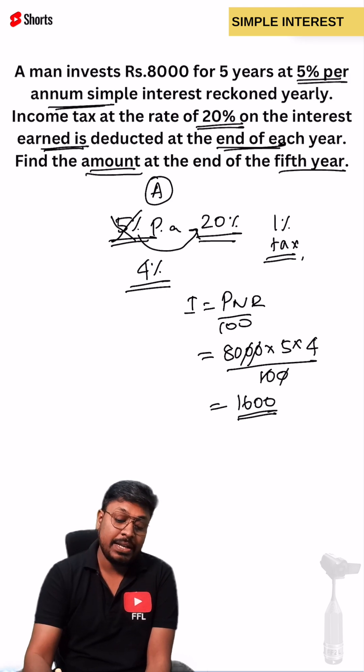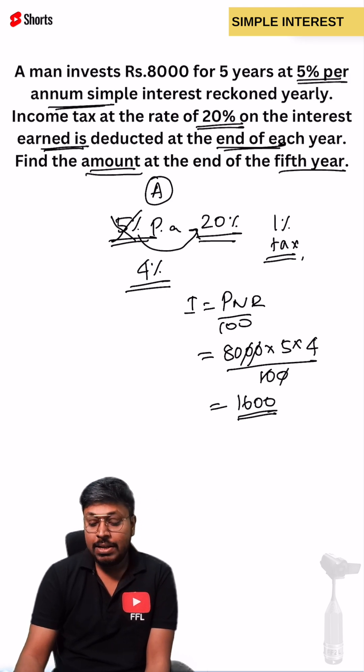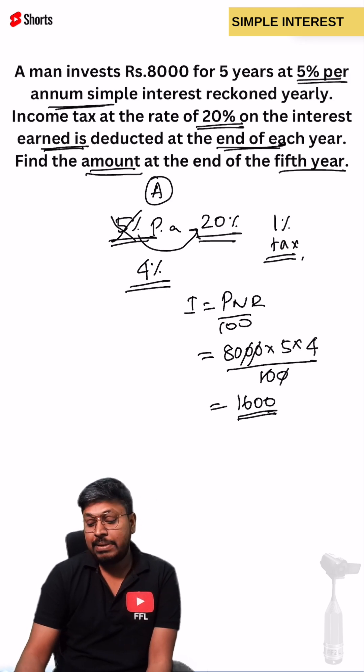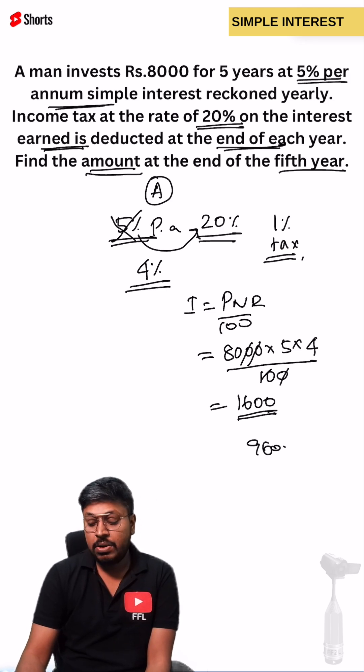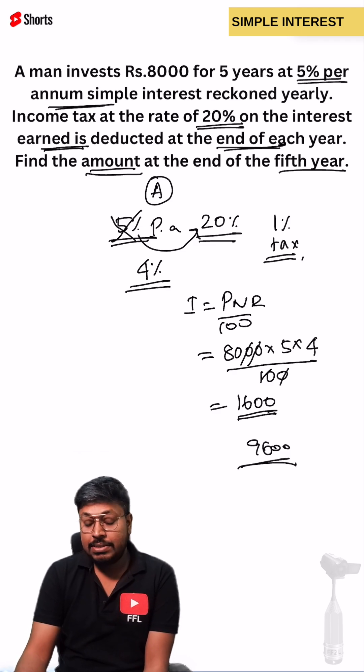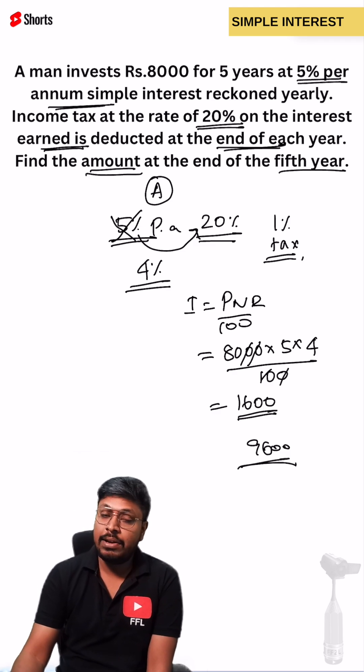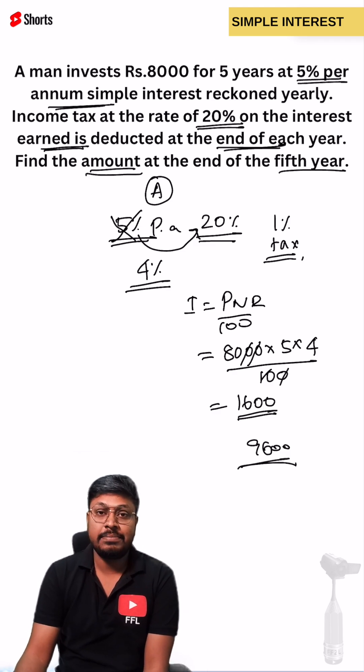Now we need to find the overall amount. So 8,000 plus 1,600 equals 9,600. That is the total amount received at the end of the 5th year.